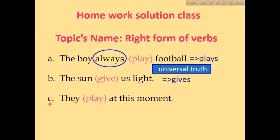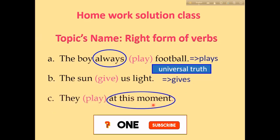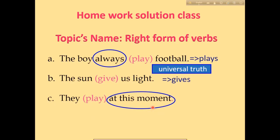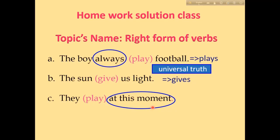Number C: 'They play at this moment.' The phrase 'at this moment' is used in present continuous tense. In present continuous tense, am/is/are plus verb-ing is used. 'Play' is the verb here, so the correct form is 'are playing.'